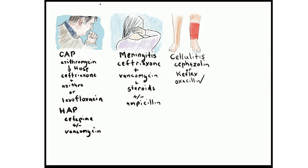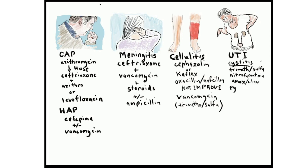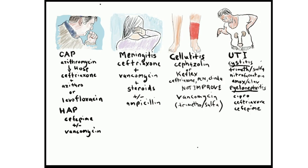First, pneumonia. There are two forms: community-acquired pneumonia, abbreviated CAP. In patients that do not require hospitalization, the macrolide antibiotic azithromycin is recommended. For patients requiring hospitalization, ceftriaxone and azithromycin is preferred, but the fluoroquinolone levofloxacin, which has both gram-positive and gram-negative coverage, can also be used. For hospital-acquired pneumonia, abbreviated HAP, very broad-spectrum coverage is recommended. Cefepime can be used. Other possible treatments include a carbapenem with pseudomonas coverage or piperacillin-tazobactam. If there is concern for MRSA, vancomycin can be added.